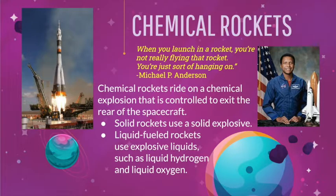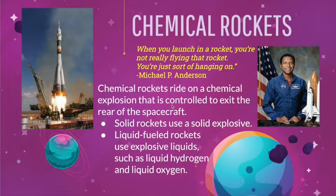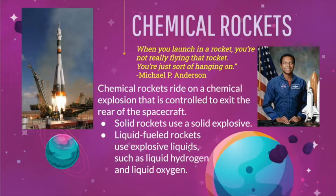As I mentioned, there are different kinds of rockets. The most common ones are chemical rockets, but in every case, chemical rockets or nuclear rockets are mainly riding on a controlled explosion that comes out the back of the rocket. As astronaut Michael P. Anderson said, when you launch in a rocket, you're not really flying it — you're just sort of hanging on. The main challenge in rocketry is how to get the explosion to go in the right direction and not fail by coming out the sides or top, which would be a major problem.